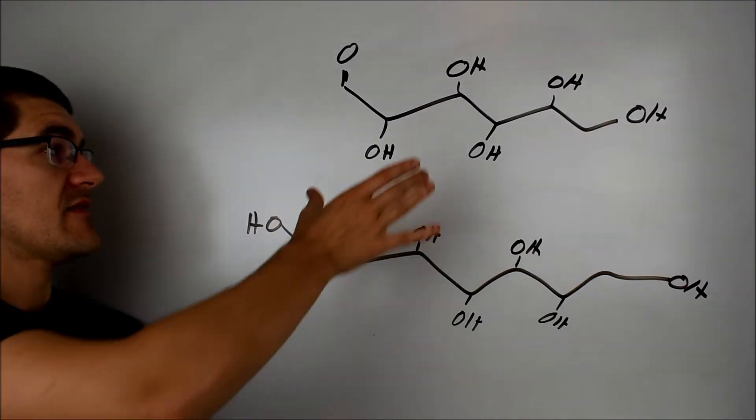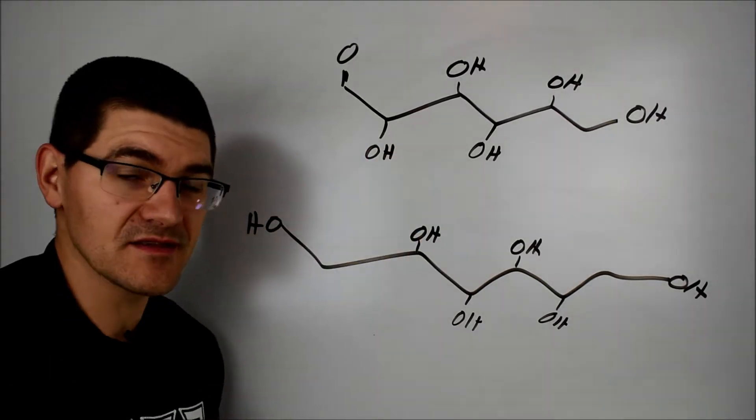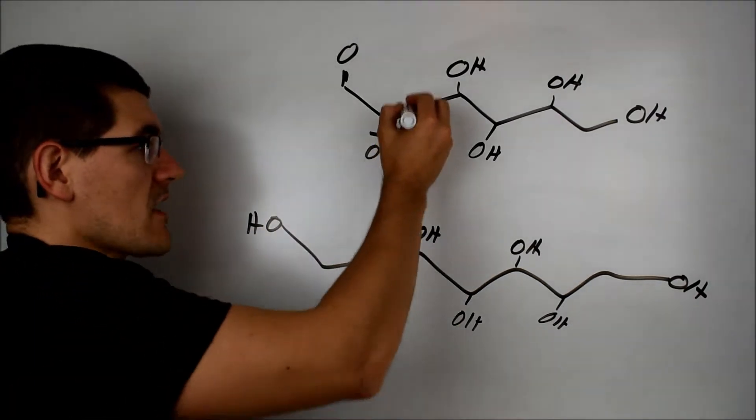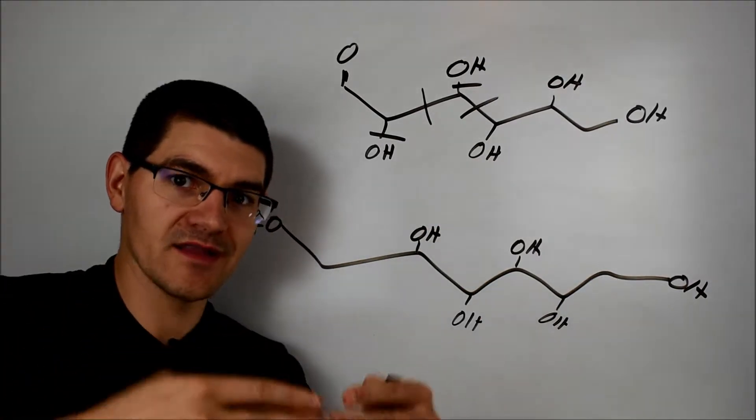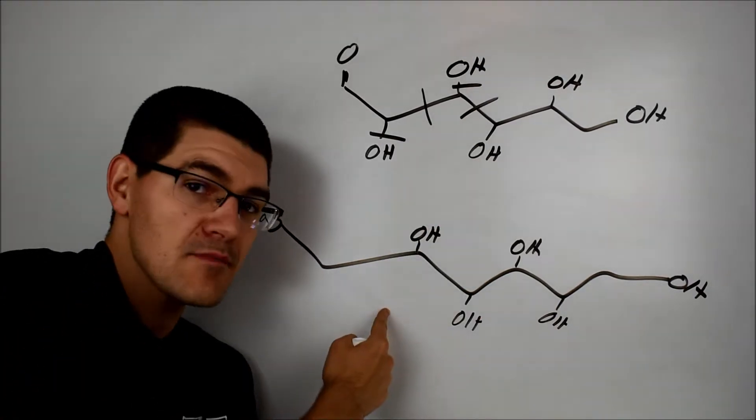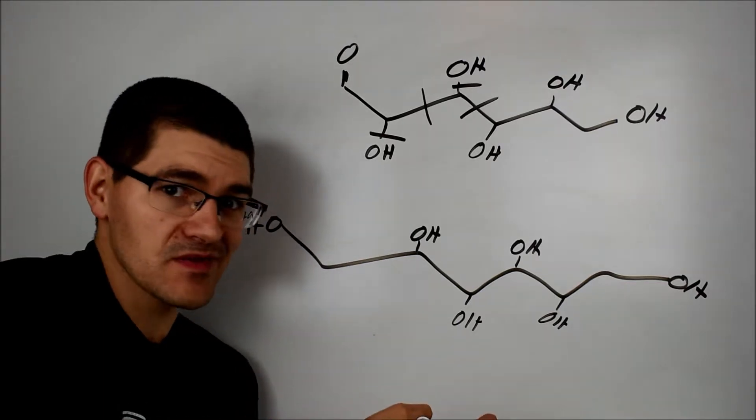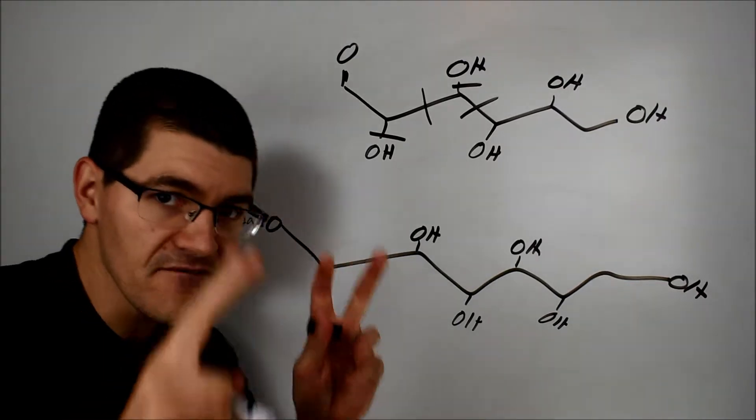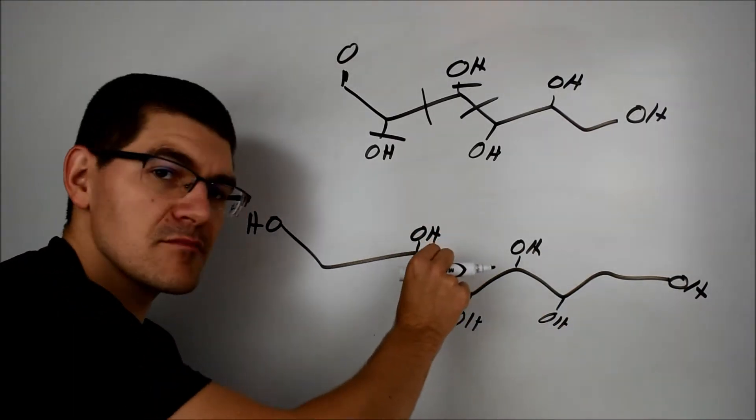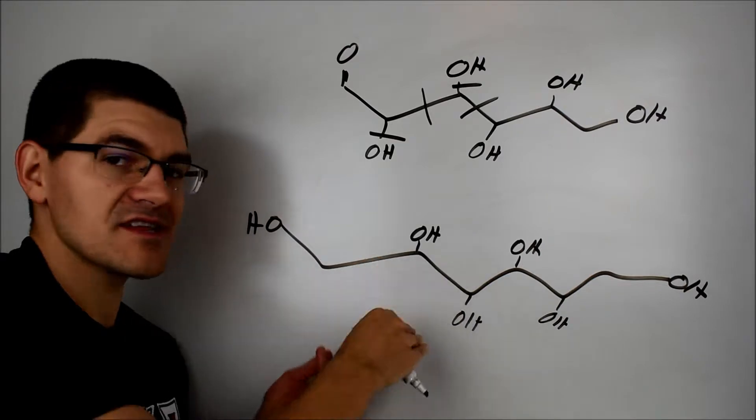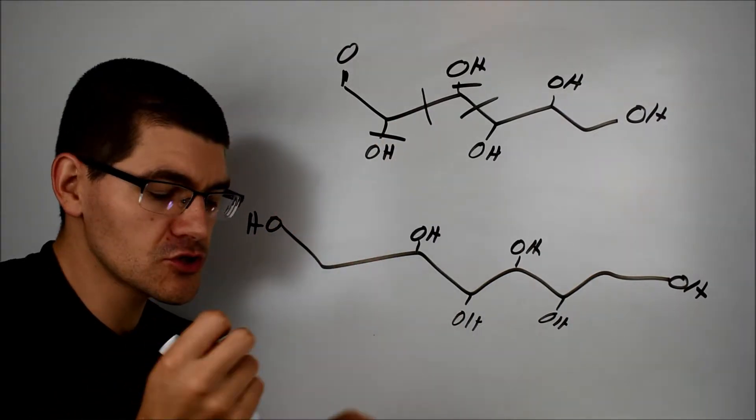The idea being here that when I eat glucose, the body metabolizes it. It breaks the bonds of this molecule and extracts the energy between those bonds. When I eat mannitol, nothing happens. Generally speaking with these fake sugars, the body cannot metabolize these. They can't break the bonds and access the energy between them the same way it can with a real sugar.